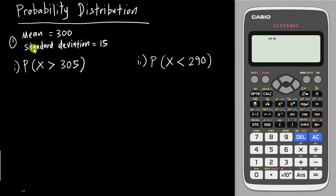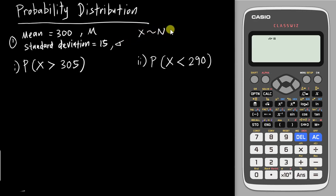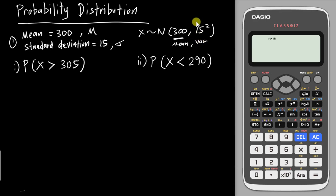For example, in the exam you might see a question where the mean is given as 300 and the standard deviation is 50. They will use the symbol μ to represent the mean and σ for standard deviation. Sometimes they write x ~ Normal(300, 15²), where the first value is the mean and the second is the variance. Since variance and standard deviation are related by squaring, square root of 15² gives back 15.